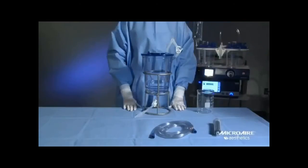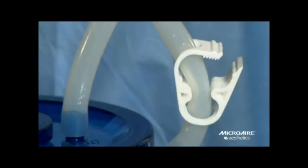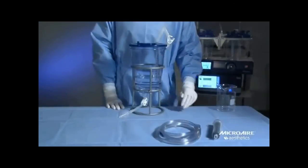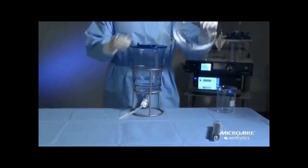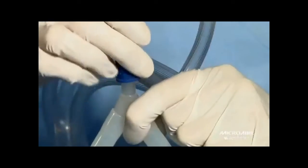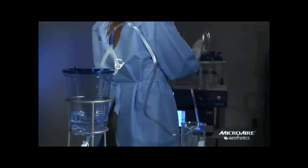It is important that the white pinch clamp remain open during the harvesting process. Only close it to drain the fluid. Attach the sterile transition tubing to the top connector on the manifold. Connect the opposite end to the waste canister.